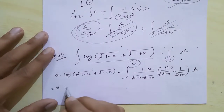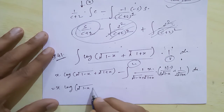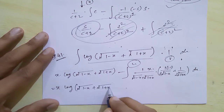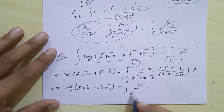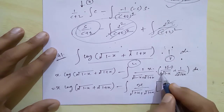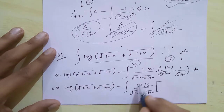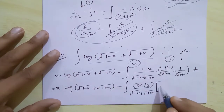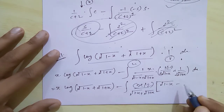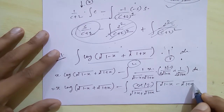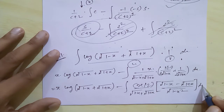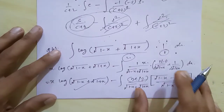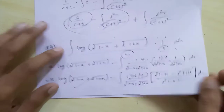So we get x · log(√(1−x) + √(1+x)) minus integral of x/(√(1−x) + √(1+x)) · x/2. When we rationalize, cross-multiplying gives the term (√(1−x) − √(1+x)) positive, divided by (√(1−x))² − (√(1+x))², which is (1−x) − (1+x) = −2x.